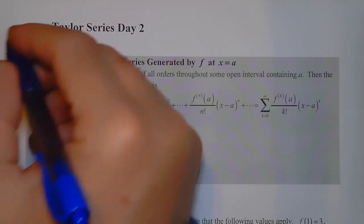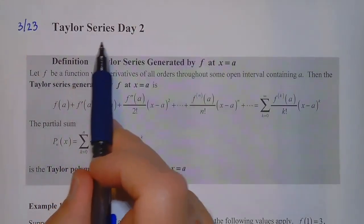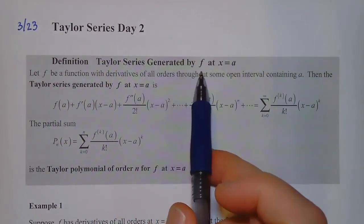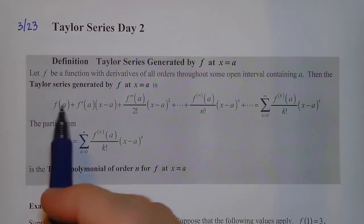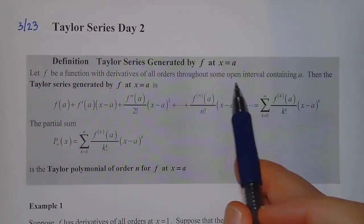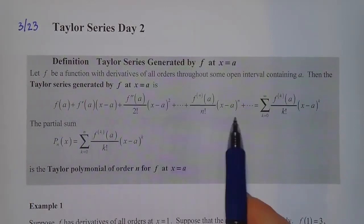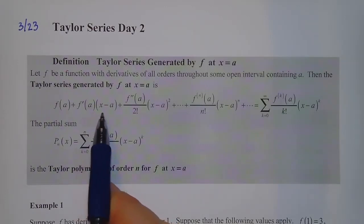Today is March 23rd and we're doing Taylor series day two. We're going to work with the Taylor series generated by a function f at x equals a, so this is no longer centered at x equals zero like the last lesson — we're going to center it at different places. Let f be a function with derivatives of all orders throughout some open interval containing a. Then the Taylor series generated by f at x equals a looks just like before, but at a instead of zero.